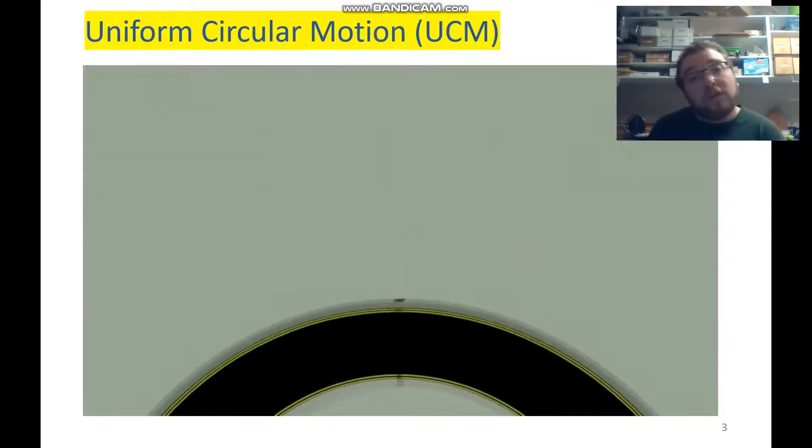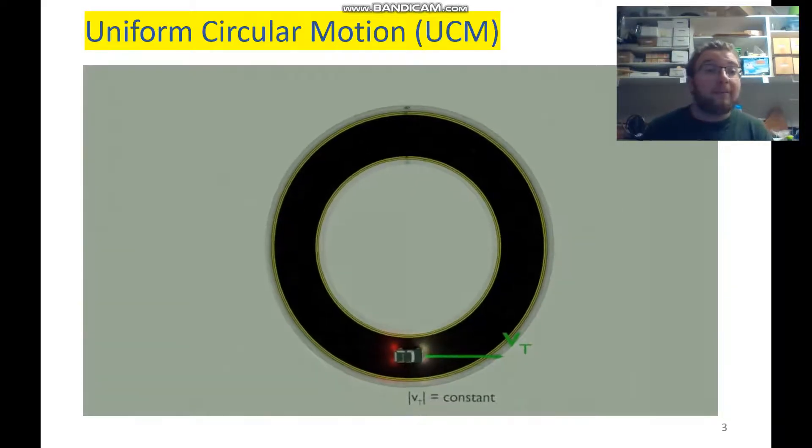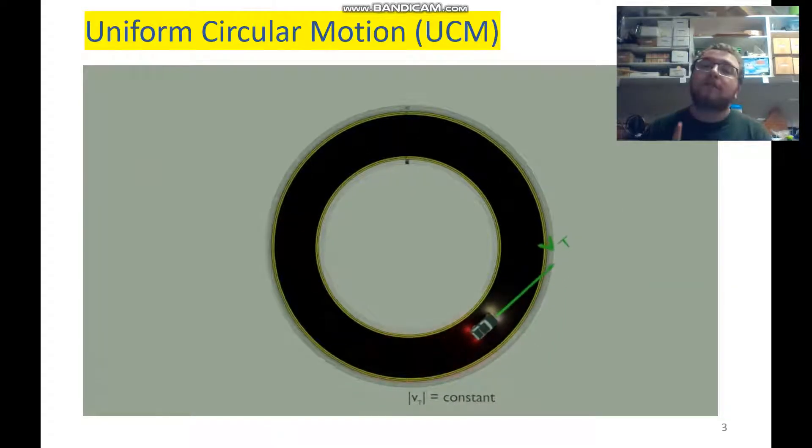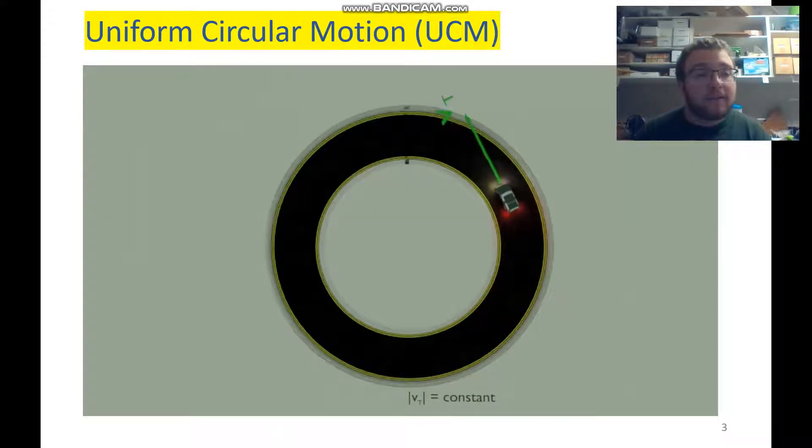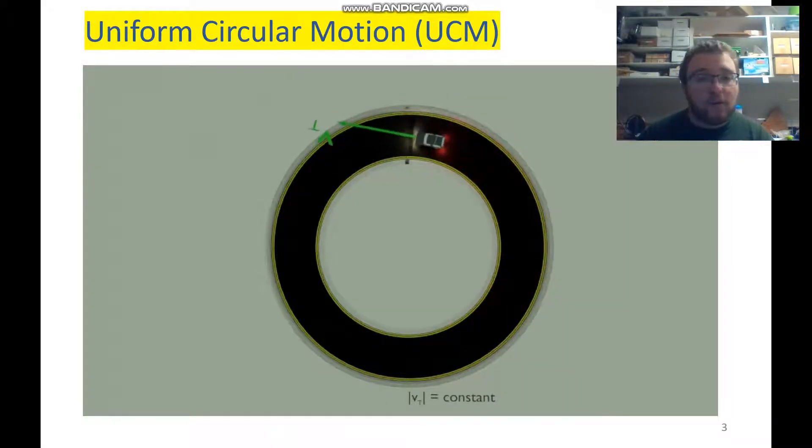So this animation will show us what uniform circular motion or UCM is. If we have a car that's driving around in a circle at a constant speed, that is UCM.